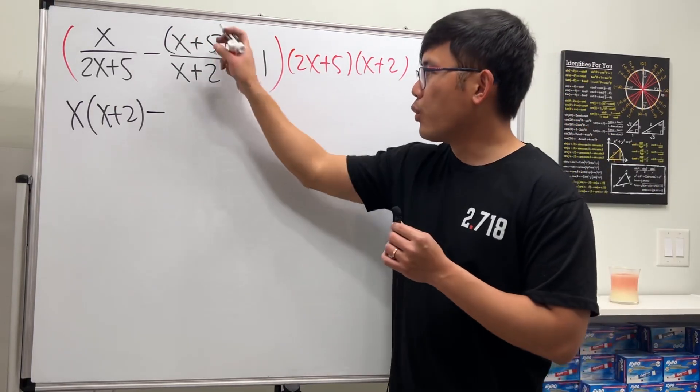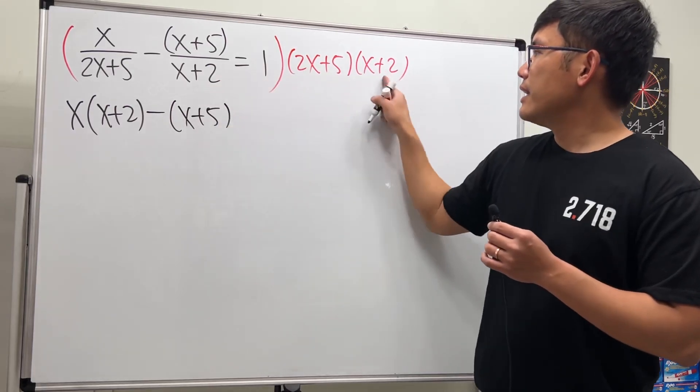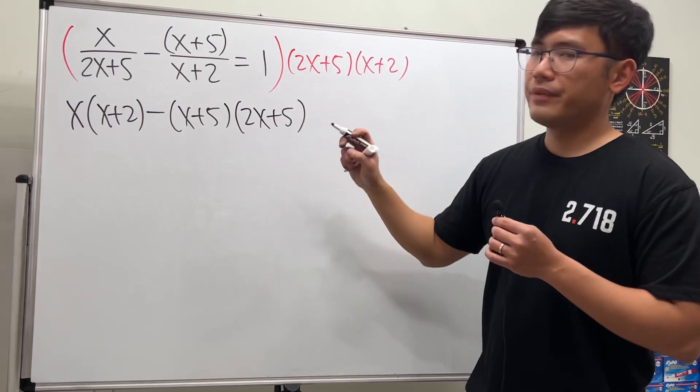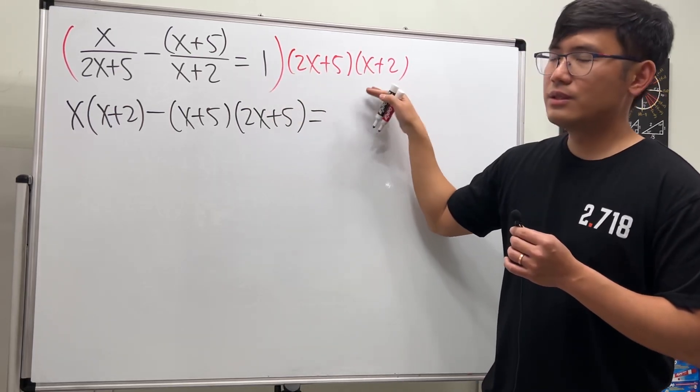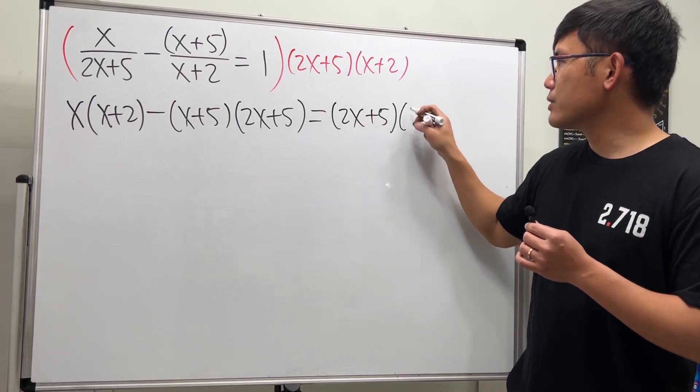Here originally we have the x plus 5, and technically there's a parentheses right here, so be sure we use parentheses accordingly. So x plus 5 here—they cancel, but we have this, so the 2x plus 5 is here. Then this equals 1 times this, so we'll just multiply them right here: 2x plus 5 and also the x plus 2.